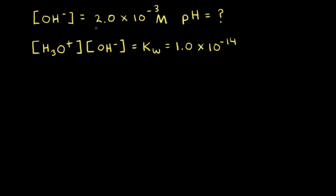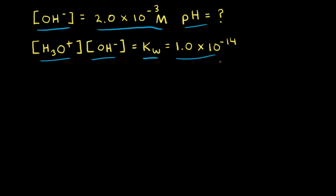Let's say we have some cleaning solution at room temperature, which is 25 degrees Celsius, with some ammonia in it. The concentration of hydroxide ions in solution is measured to be 2.0 times 10 to the negative third molar, and our goal is to calculate the pH. The first step is to use the Kw equation: the concentration of hydronium ions times the concentration of hydroxide ions equals Kw, which at 25 degrees Celsius is 1.0 times 10 to the negative 14.